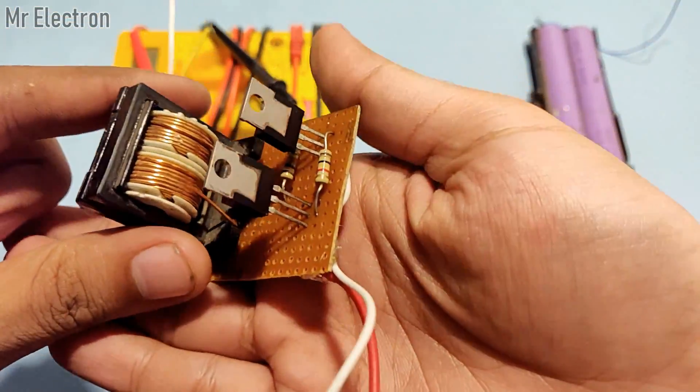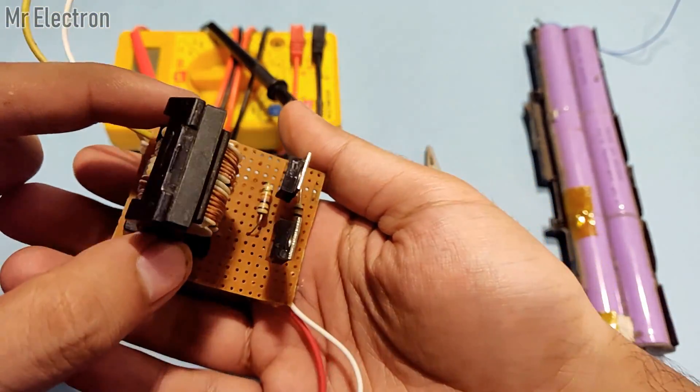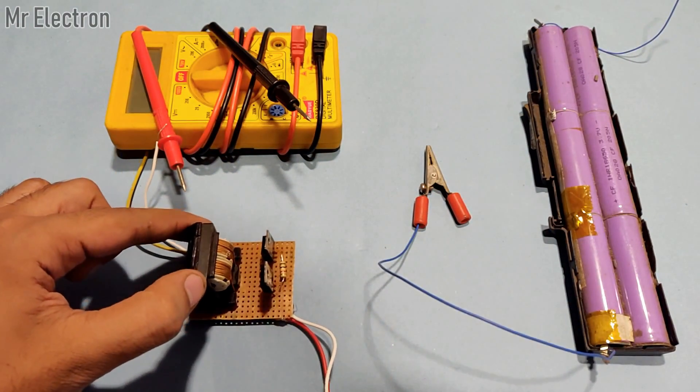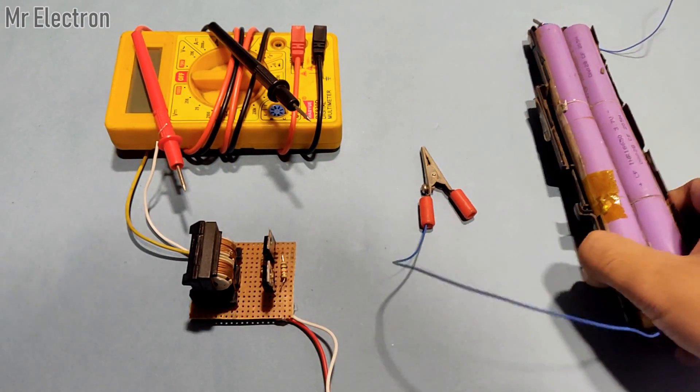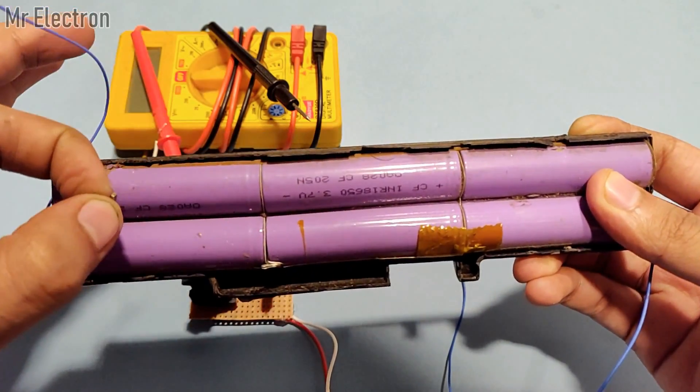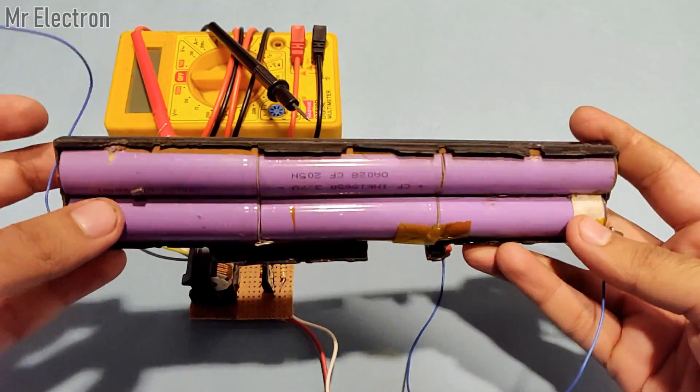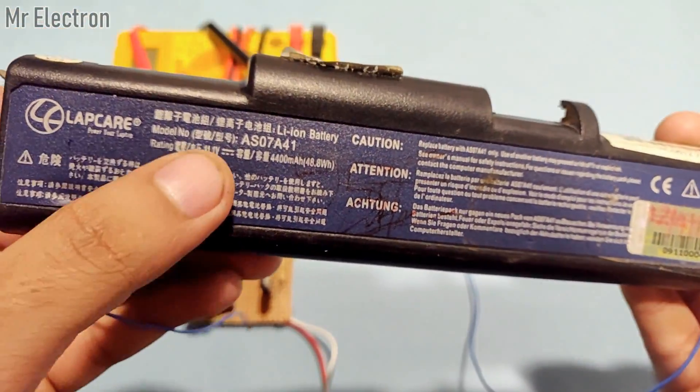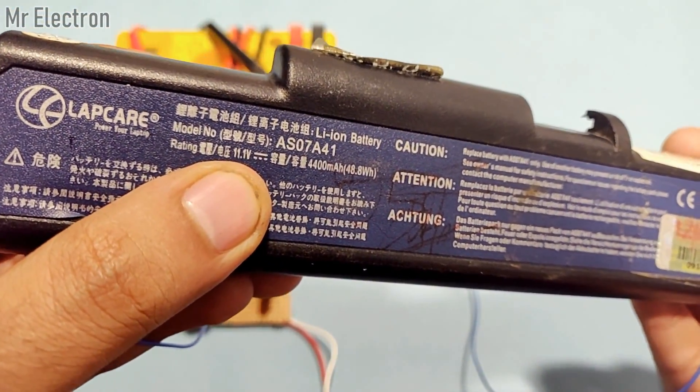Hi guys, you have already seen the construction part of this DC to DC voltage step-up converter circuit or booster circuit in my previous video. Today I'm going to use this circuit to charge an old lithium-ion laptop battery. As you can see, the voltage rating of this laptop battery indicated on its back is 11.1 volts.